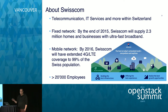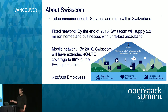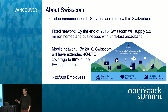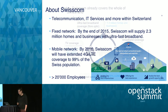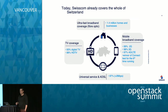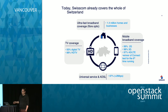Something briefly about Swisscom. Swisscom is a telecommunications company within Switzerland. It has quite a large fixed network coverage, probably providing broadband at home for most people, and the same goes for mobile network. Swisscom has about 20,000 employees. The market we serve includes fiber-optic broadband, traditional DSL, mobile broadband, and also TV coverage, including a TV offering for residential customers.